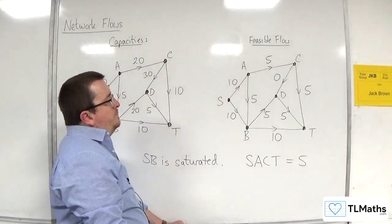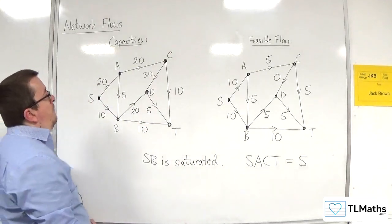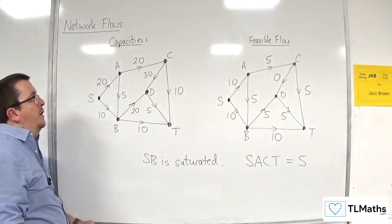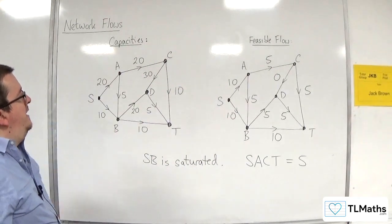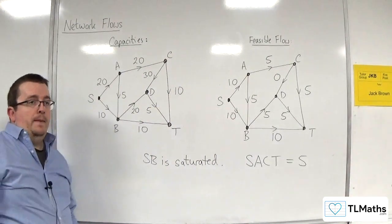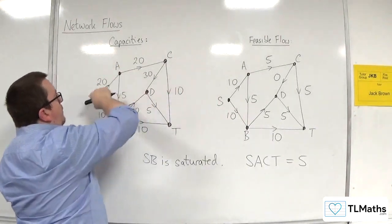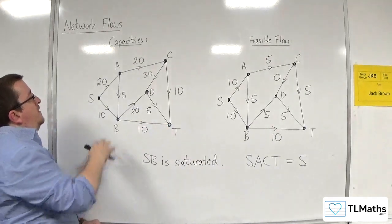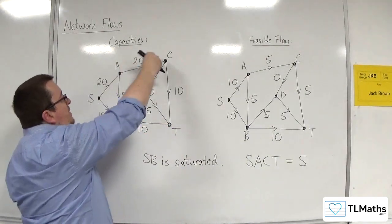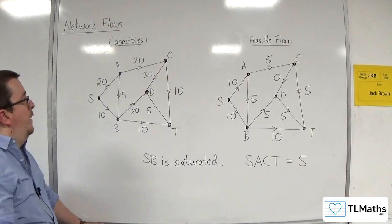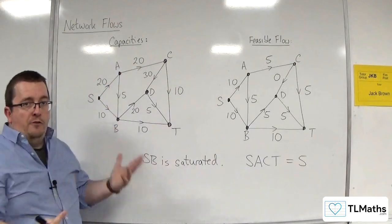When we talk about the maximum flow through that, what's the maximum possible flow that could go through S, A, C, T? Well, it would be 10. Because 10 is the smallest of the three edges that you've got there, 20, 20, 10. You can't pump more than 10 through that route, even though parts of it allow for more.